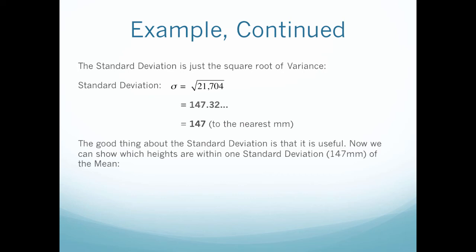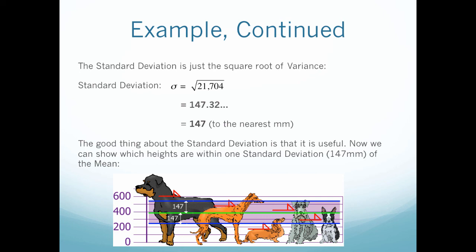The good thing about the standard deviation is that it is useful. Now we can show which heights are within one standard deviation of the mean. So here you can see that the blue line is my standard deviation. So with that, I can show which dogs are within one standard deviation of my mean, meaning which dogs are probably not an outlier.